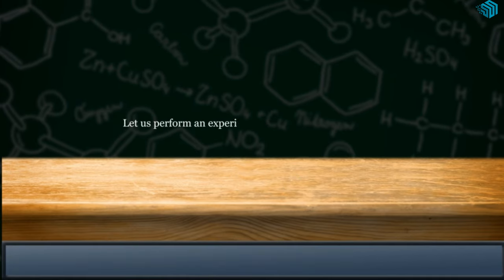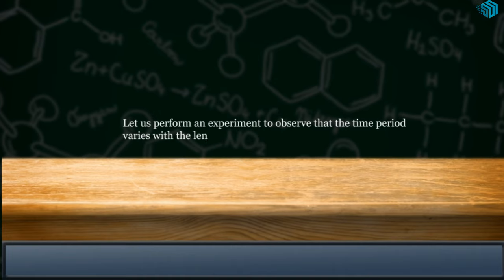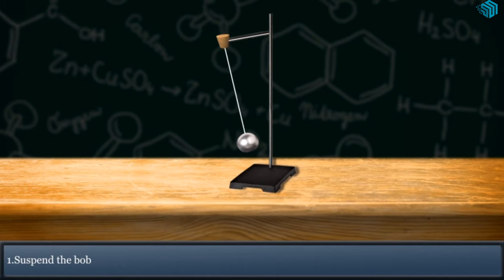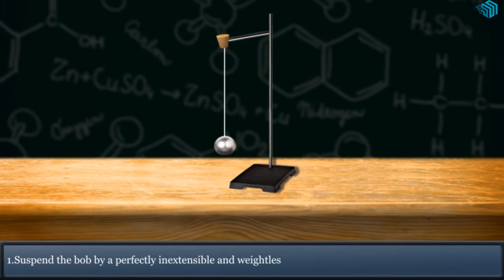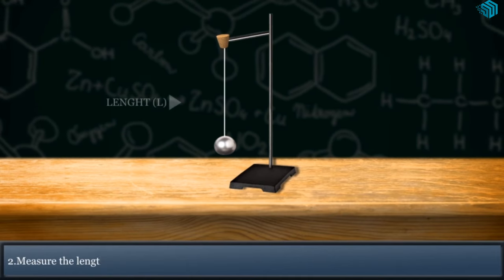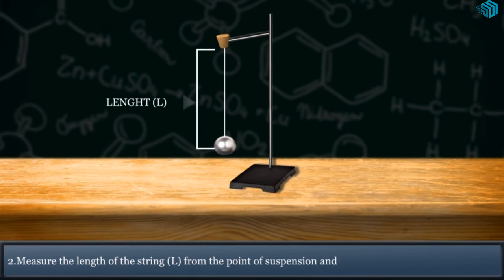Let us perform an experiment to observe that the time period varies with the length of the pendulum. Step 1: Suspend the bob by a perfectly inextensible and weightless string. Step 2: Measure the length of the string from point of suspension to the center of the bob.